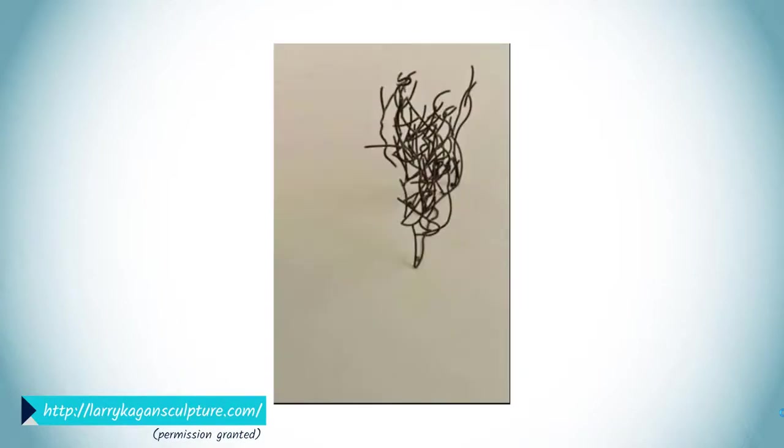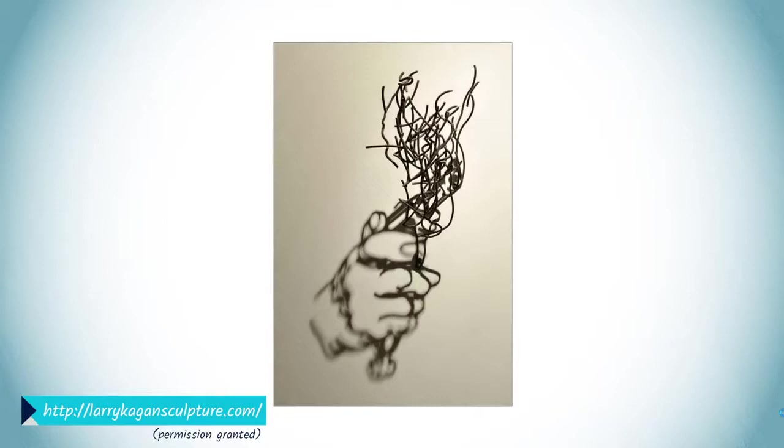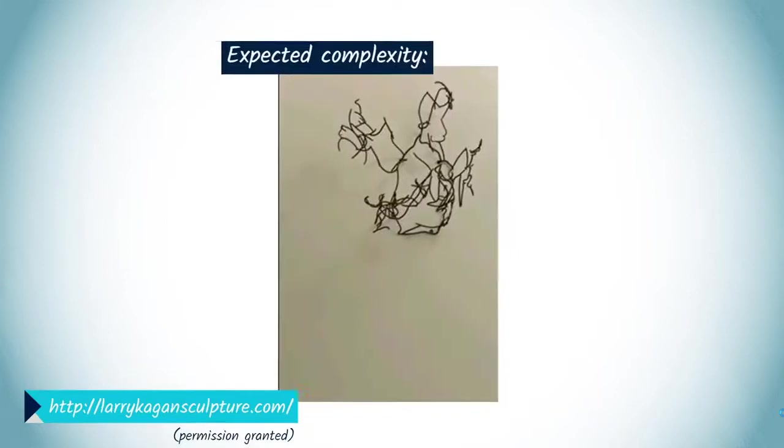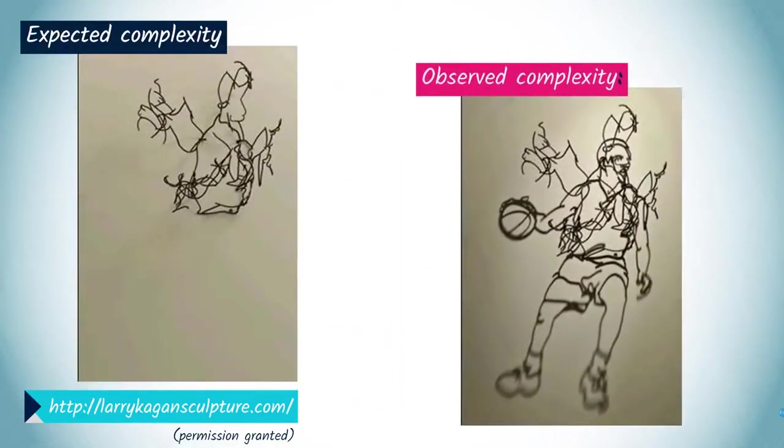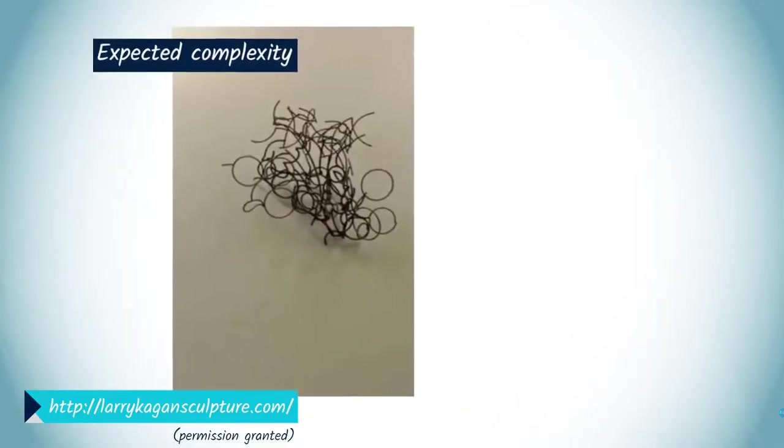Kagan's structures are a perfect example of aesthetic feelings triggered by a complexity drop. We expect a shadow as complex as the wire structure. But what we see projected on the wall turns out to be unexpectedly simple.